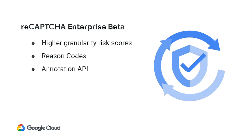With reCAPTCHA Enterprise, the introduction of V3 means you can put the snippet anywhere, which gives you a much broader set of use cases. In V2, a lot of common use cases were around the login flow. Now with the frictionless experience, you can put it anywhere on your site, kind of just like Google Analytics would. Because of that, there are many more use cases that we want to enable enterprises to attune your business and fraud and risk teams to.